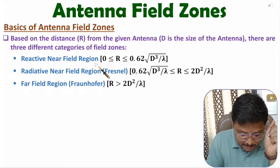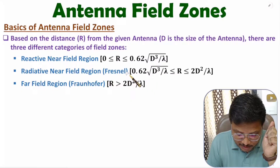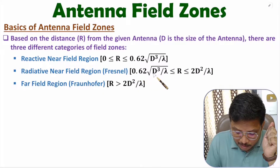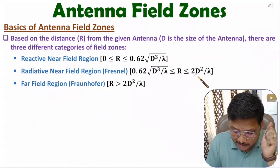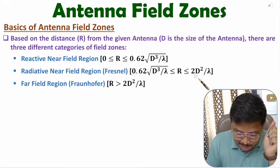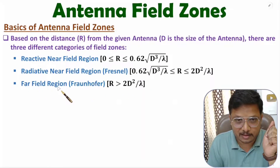If distance is between the reactive near field and far field boundaries, we have the radiative near field region, where distance ranges from 0.62√(d³/λ) to 2d²/λ. If distance is greater than 2d²/λ, then we have the far field region.